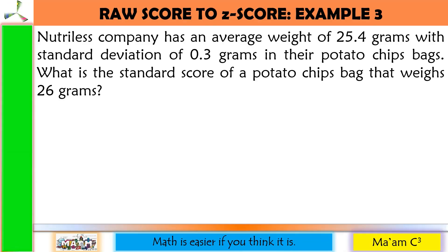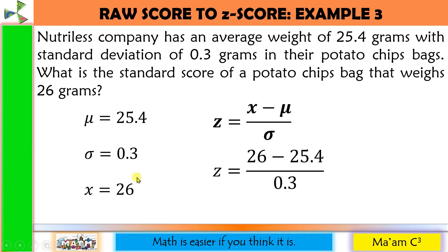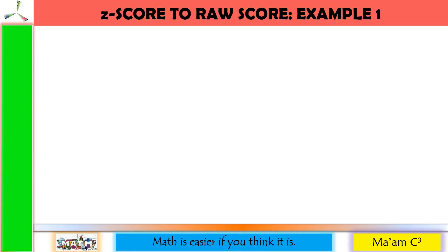Another one, Nutriless Company has an average weight of 25.4 grams with a standard deviation of 0.3 grams in their potato chip bags. What is the standard score of potato chips bag that weighs 26 grams? So this is the X. Recall the formula. Now substitute. We have 26 minus 25.4 divided by 0.3. And this will give us positive 2.